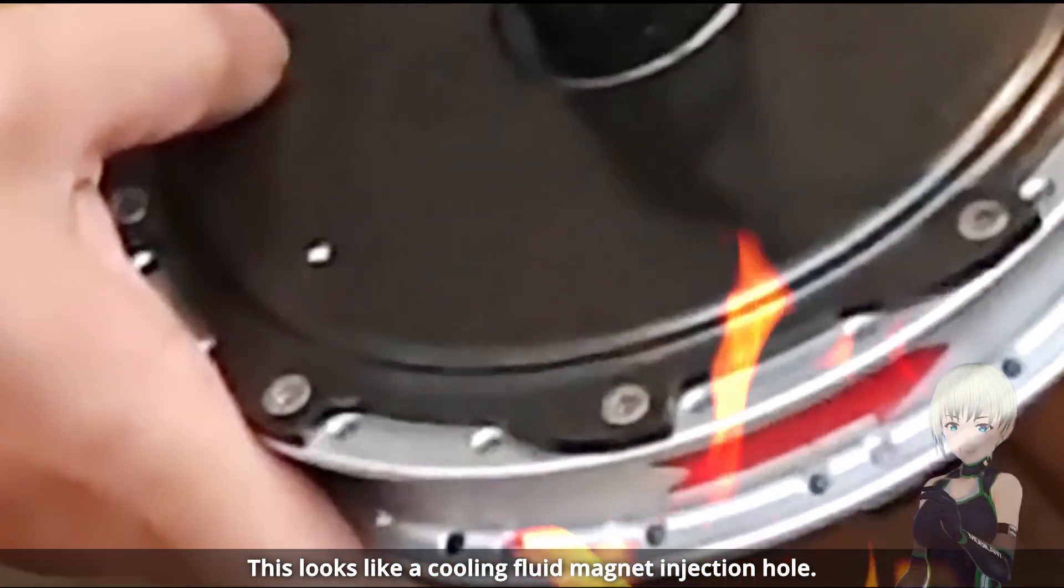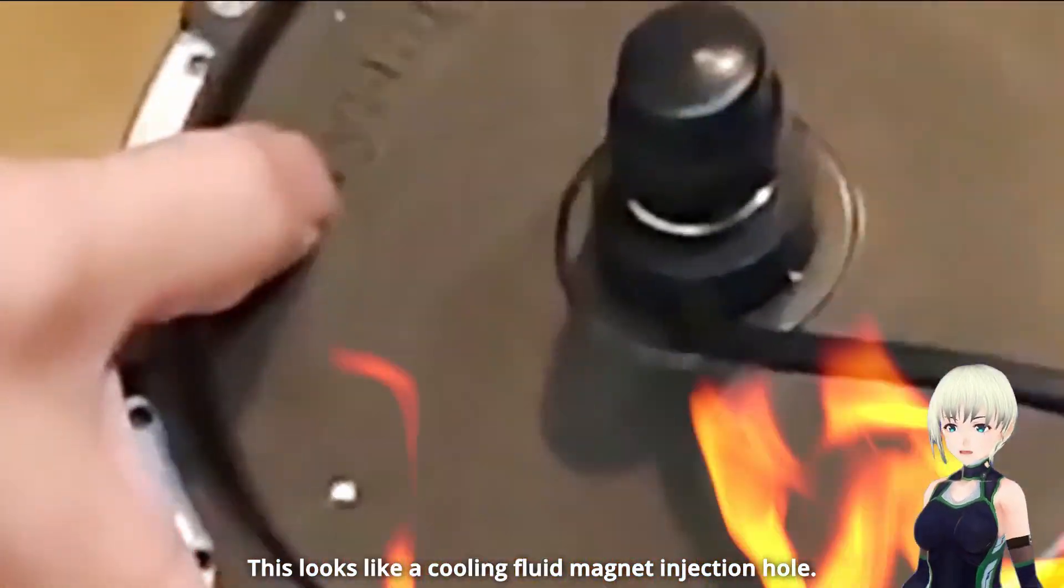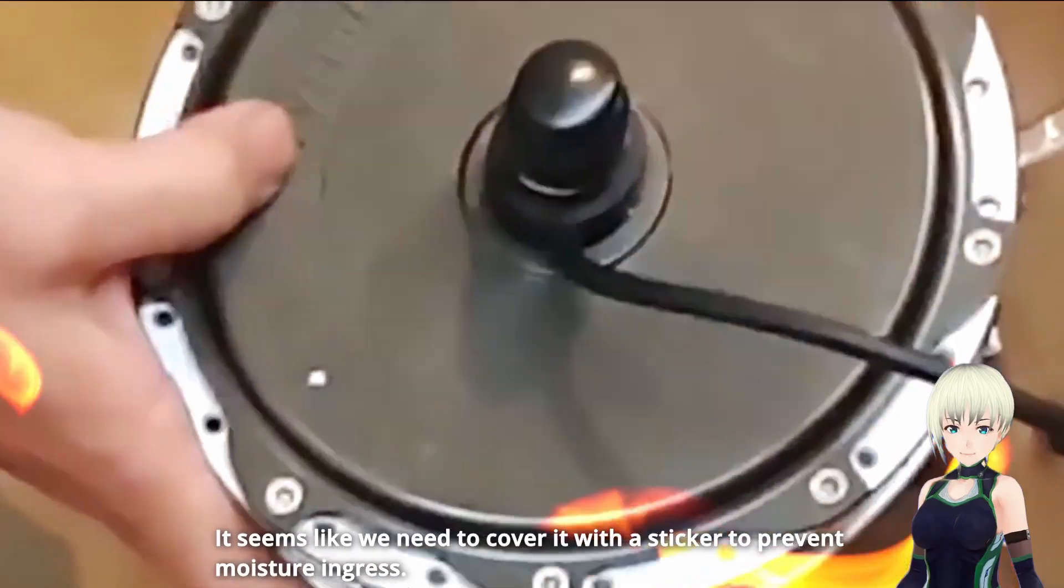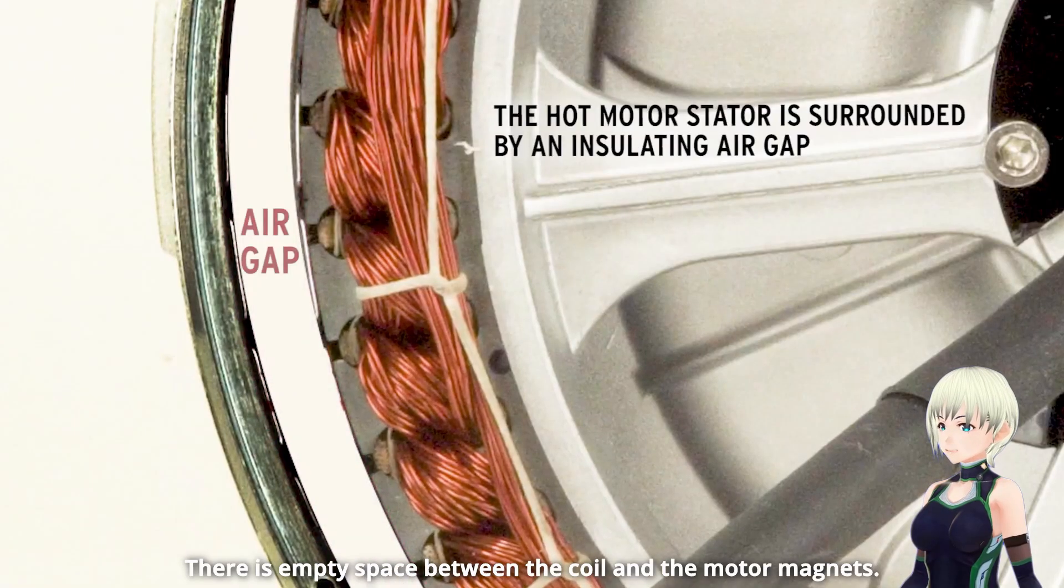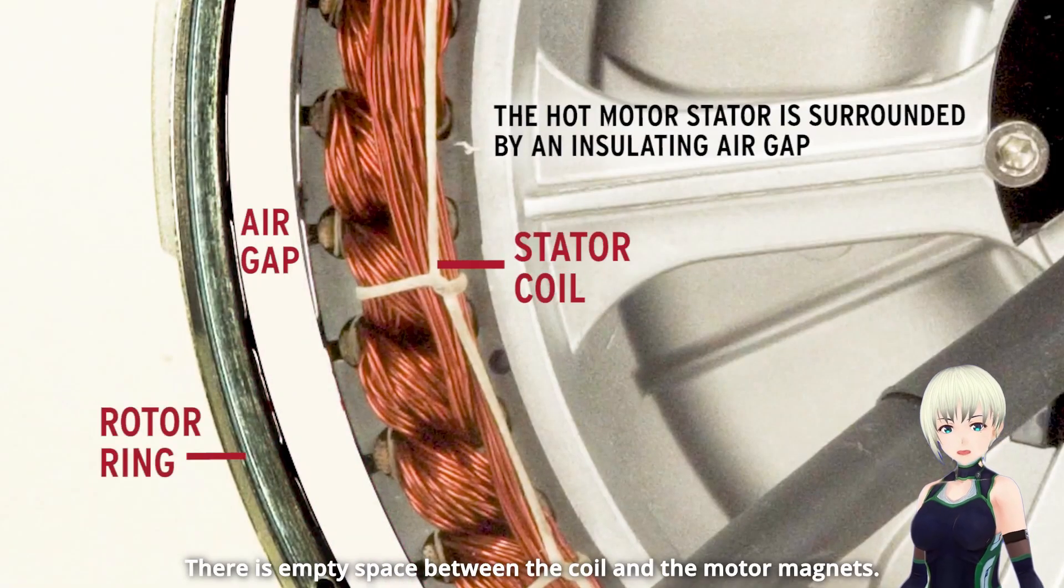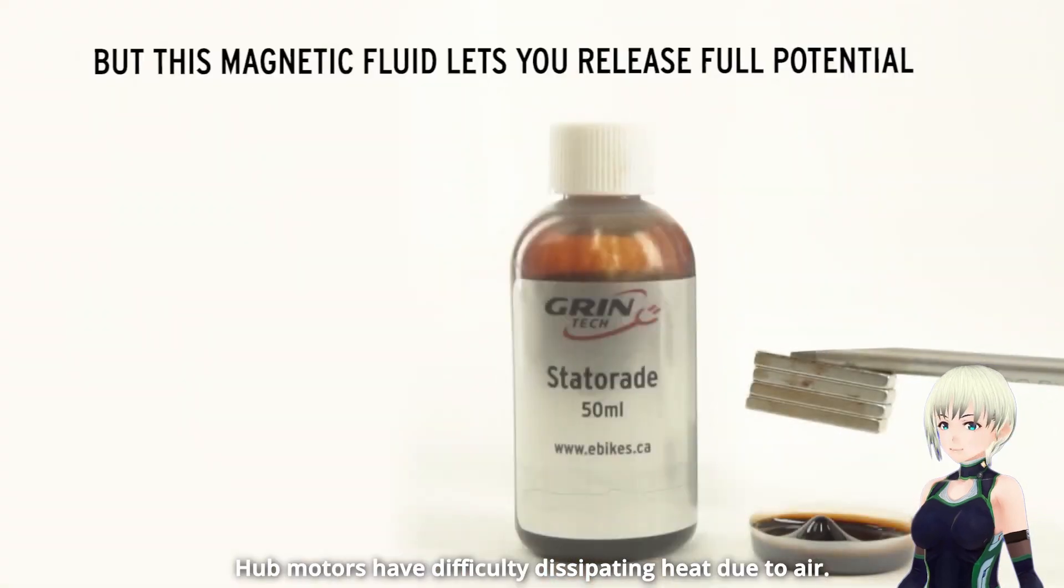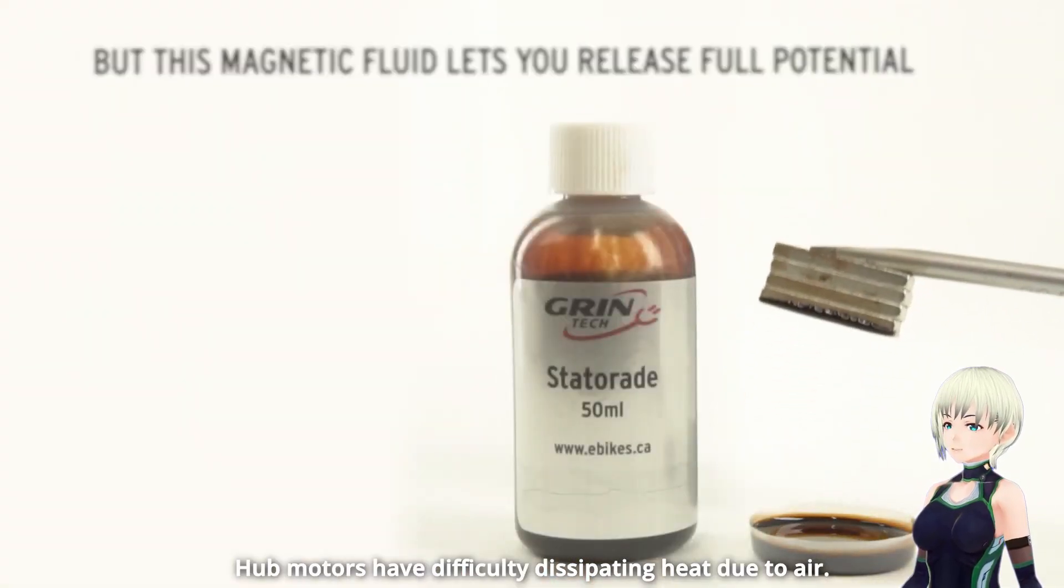This looks like a cooling fluid magnet injection hole. It seems like we need to cover it with a sticker to prevent moisture ingress. There is empty space between the coil and the motor magnets.